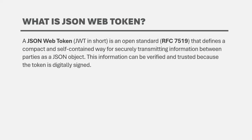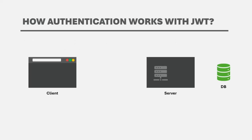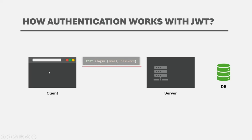Let's start with authentication. Here we have a client and a server. The server is where our NestJS application is hosted. The client can be anything from where we are making requests to this web API — a browser, a mobile app, or a tool like Postman. Assuming we already have some users in the database, when a user tries to log in, he sends a login request.